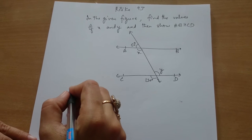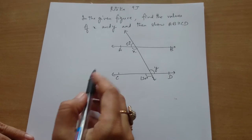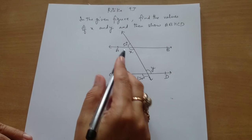To find angle X, we will take angle X plus 50 degrees as a linear pair.